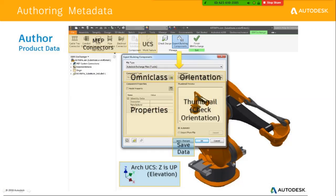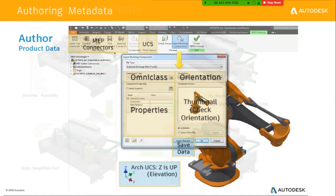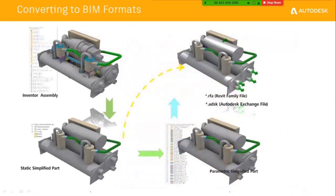We can export from Inventor in IFC as well as .rfa format. We don't need to make any changes in Revit — whatever changes we want to make can be done in Inventor itself. So the workflow is: create an Inventor assembly, simplify it by removing unwanted geometries, then convert it either as a parametric simplified part or directly as a Revit-format file, which Revit will recognize as a family file or IFC file.